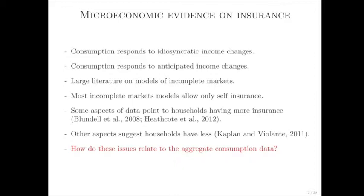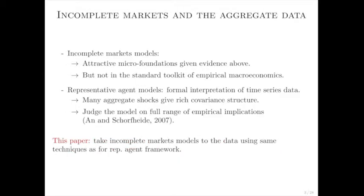The analysis I'm performing here is partially integrating two literatures. Incomplete market models are attractive and are a necessity for discussing what types of insurance households have — we like the microfoundation. But they're not really in the standard toolkit of empirical macro. For representative agent models, we have formal methods of interpreting time series data. In that approach, you load up the model with lots of shocks that create a rich covariance structure for observable data, and then you judge the model based on the full range of its empirical implications. What I'm going to do is use these methods — applied for representative agent models — to interpret the empirical implications of an incomplete markets model.